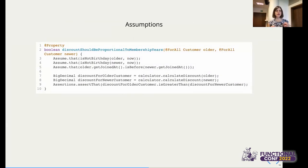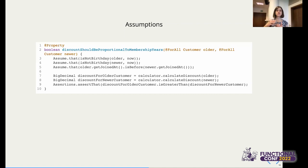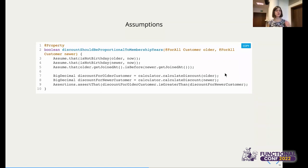What if you need to specify a relationship between instances? For the property that discount should be proportional to membership years, we need one customer who joined earlier and one who joined later. We can use assumptions. Assumptions tell the library: out of the generated data, only take those for which this assumption is true — only pairs where neither customer has a birthday today, and where one customer joined earlier than the other. With those assumptions in place, we call calculateDiscount for both and assert that the discount for the older customer is greater than or equal to that for the newer one.